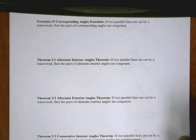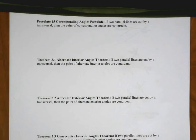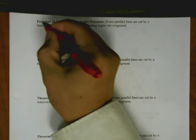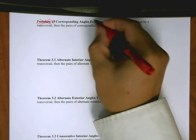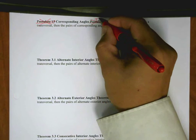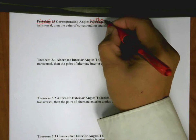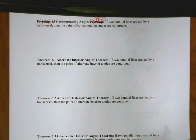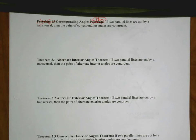Hello, students, and welcome to the proof of the corresponding angles theorem. The first thing we're going to do is cross out the word 'postulate' because it's really not a postulate. A postulate suggests that we can't prove it, and this is definitely a theorem that we are able to prove.